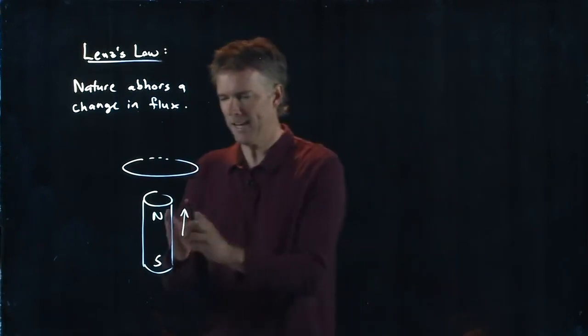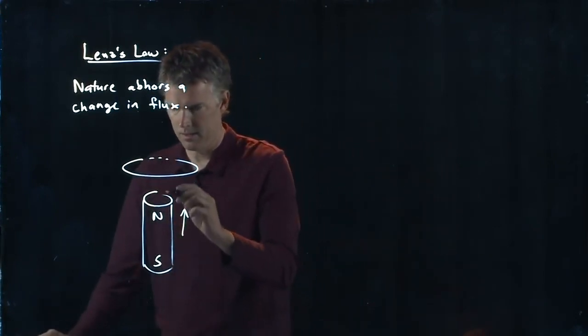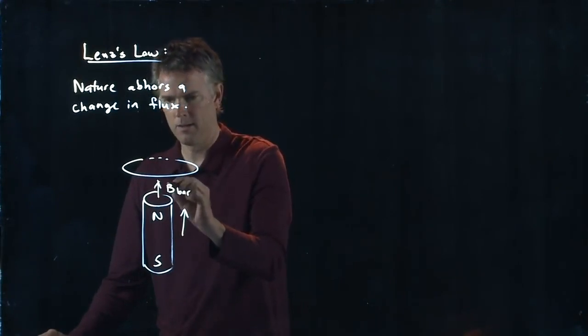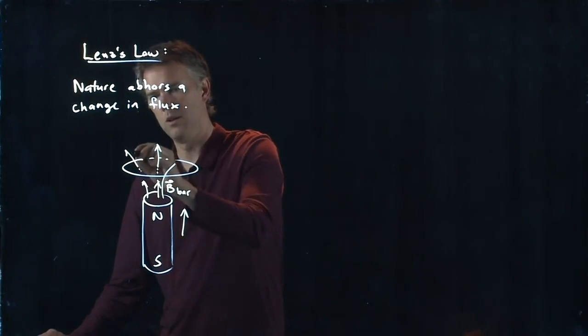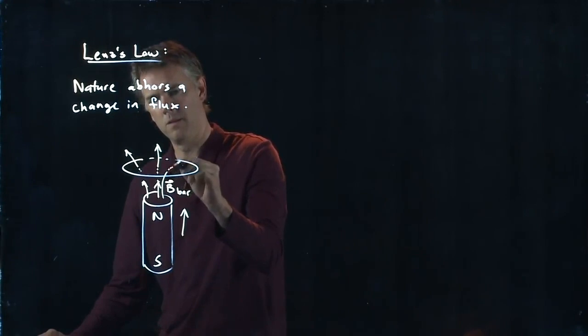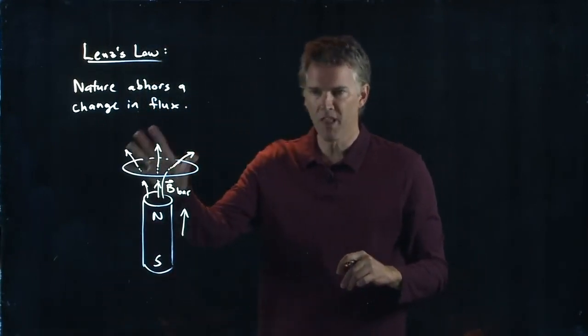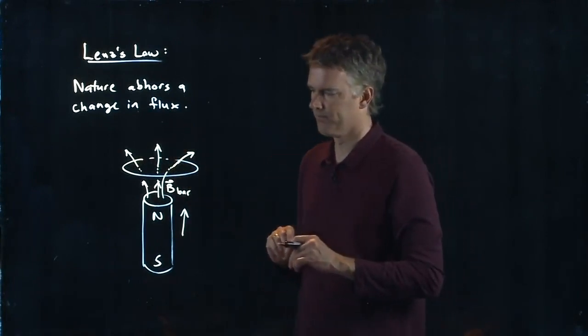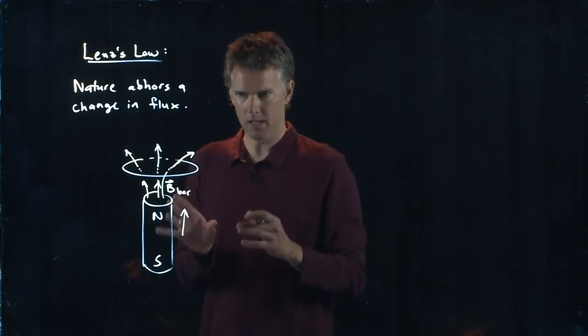Well, the magnetic field is pointing up out of this thing. So the magnetic field from the bar magnet is up and we know it's spreading out. And some of it is poking through our loop. Like so. So the flux is increasing in that loop. And it doesn't like that. It doesn't like an increase in flux.